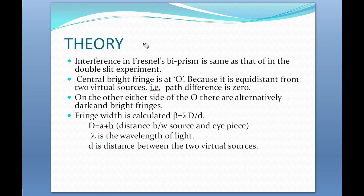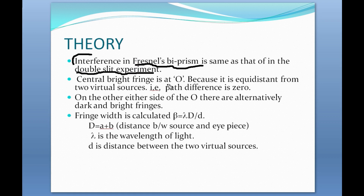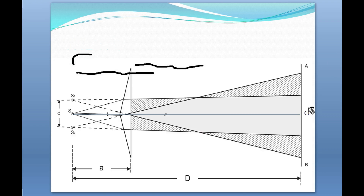Now the theory behind the Fresnel's biprism experiment: the interference formed in this experiment is the same as that of the double slit experiment. We find a central bright fringe at O, and beyond that we find alternative dark and bright fringes.